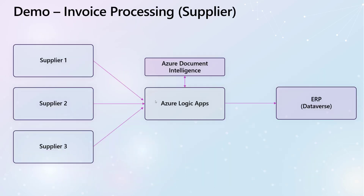Here is a high-level overview diagram of our process. Various suppliers can send in their invoices via email to a shared mailbox that Azure Logic Apps monitors. Logic Apps will receive that email, take the attachment, and pass it along to a service called Azure Document Intelligence. That service will allow us to scrape the data from the document and use it to feed our ERP — in this case, Dataverse. Let's see this in action.